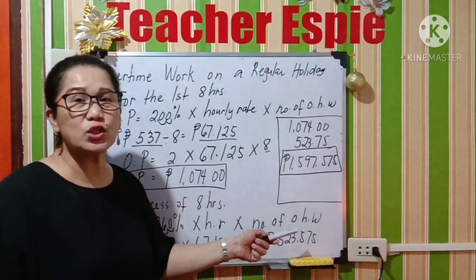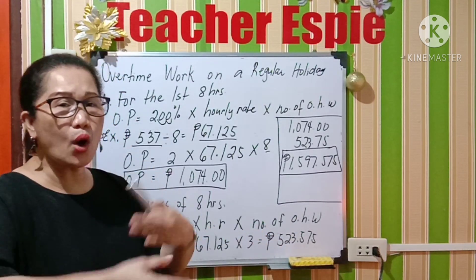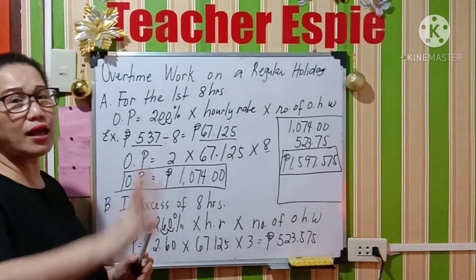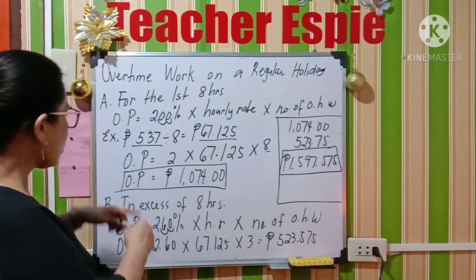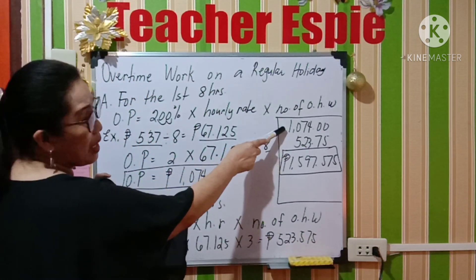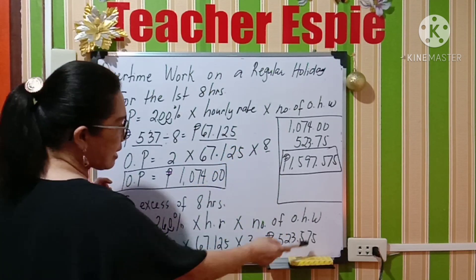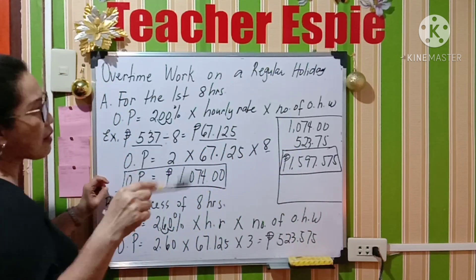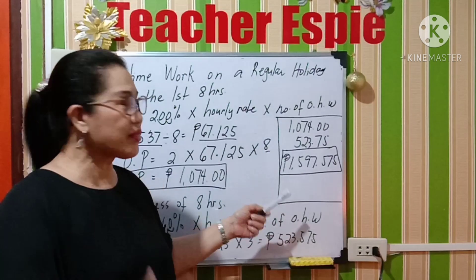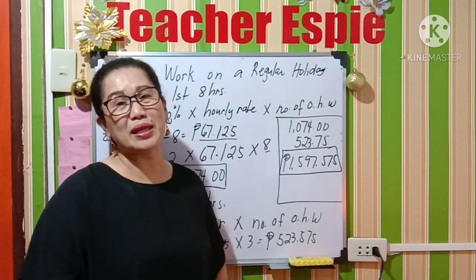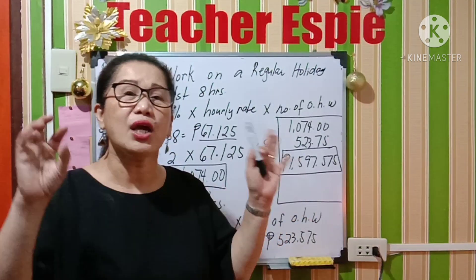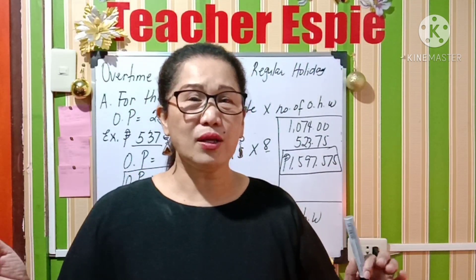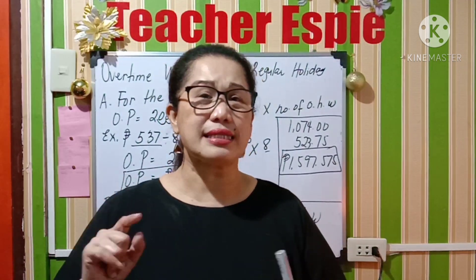Multiplying all of that gives you 523.575 pesos — that is your pay for the three hours worked beyond eight hours. So the total salary for that day on a regular holiday is: first eight hours = 1,074, plus excess three hours = 523.575, giving a total of 1,597.575 pesos. That will be your salary in one day. I hope you understand — now let me give you example number two.